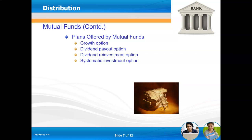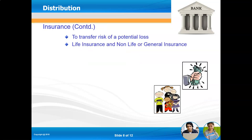Insurance is a transfer of risk for potential or unexpected loss. Life insurance covers a person's life, while non-life or general insurance covers assets like a car, home, or household goods. Health insurance also falls under general insurance.